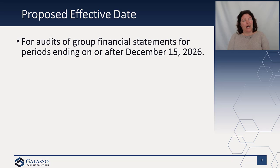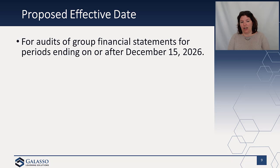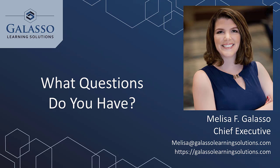This standard is out for comment, so we won't have responses until June. When they do issue it, we'll have a little bit of time before adoption. The proposed effective date is for group financial statement audits for periods ending on or after December 15, 2026. That sounds like it's a long way away, but time flies. The proposal is not too long and has a really good treatment of risk — I particularly like how they address the component auditor element, so I'd definitely recommend a quick look. You also have the opportunity to respond up until June of this year.